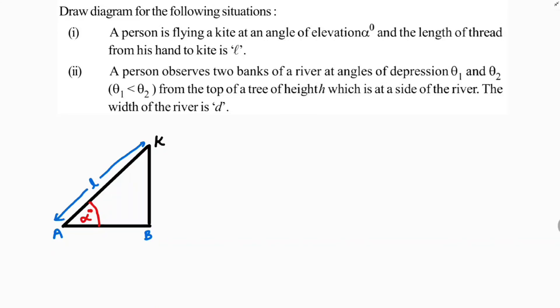Now second diagram. A person observes two banks of a river at an angle of depression theta 1 and theta 2. Theta 1 is less than theta 2, so theta 2 is greater from the top of a tree. So see, this is from the top of a tree.